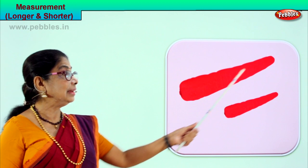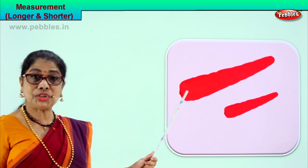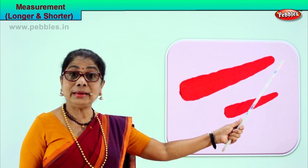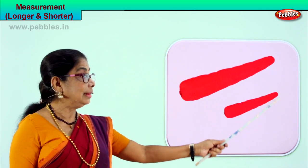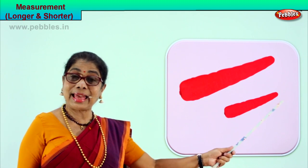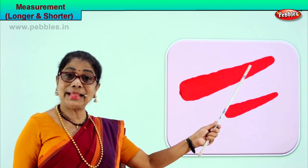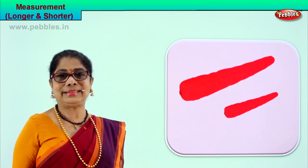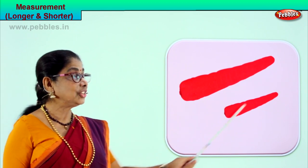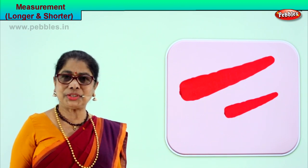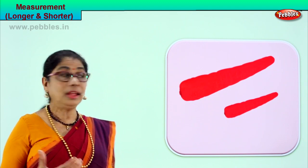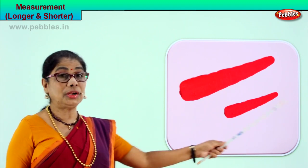Look at the length — this is a big, huge carrot. So we say this carrot is longer than this carrot, or we say this carrot is shorter than this carrot. You are looking at the picture to understand longer and shorter measurements.